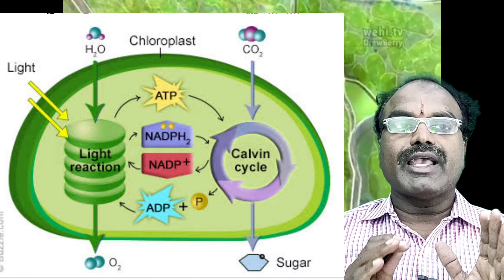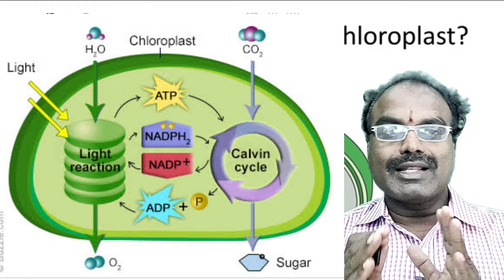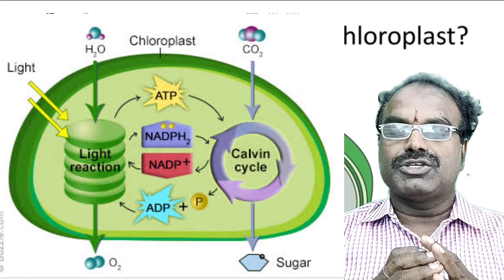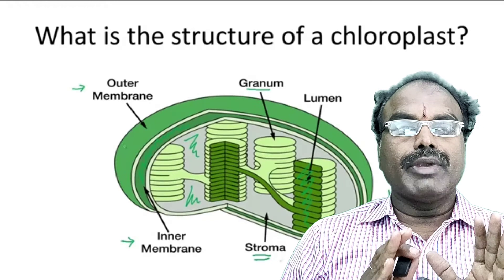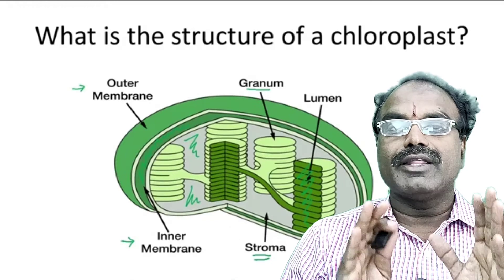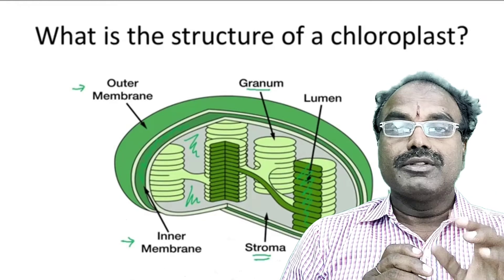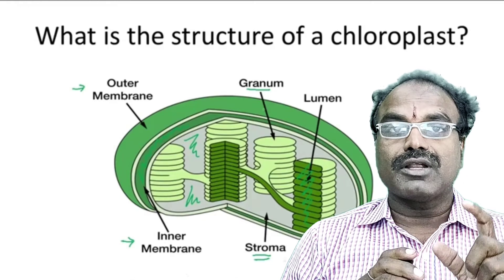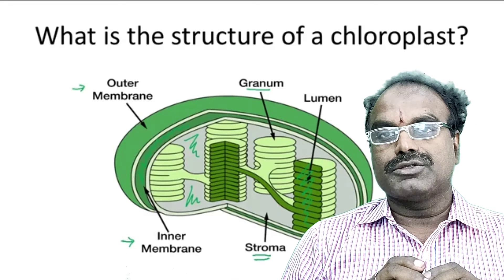Glucose is synthesized in the stroma and turns into starch. The green colour pigment called chlorophyll is located in the thylakoid membrane. This is the structure of the chloroplast.